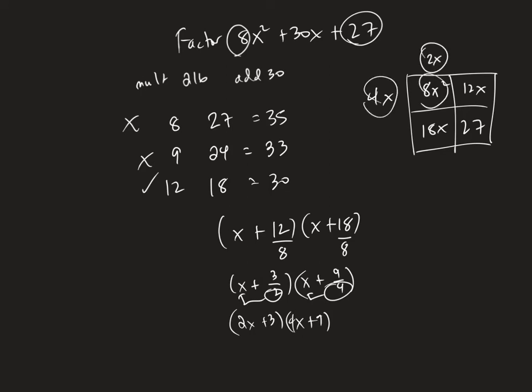And if this is 4x and this is 8x², this has to be 2x. If this is 2x and this is 18x, this has to be 9. If this is 9 and this is 27, this has to be 3. And 3 and 4x gives 12x. So 4x + 9, 2x + 3.